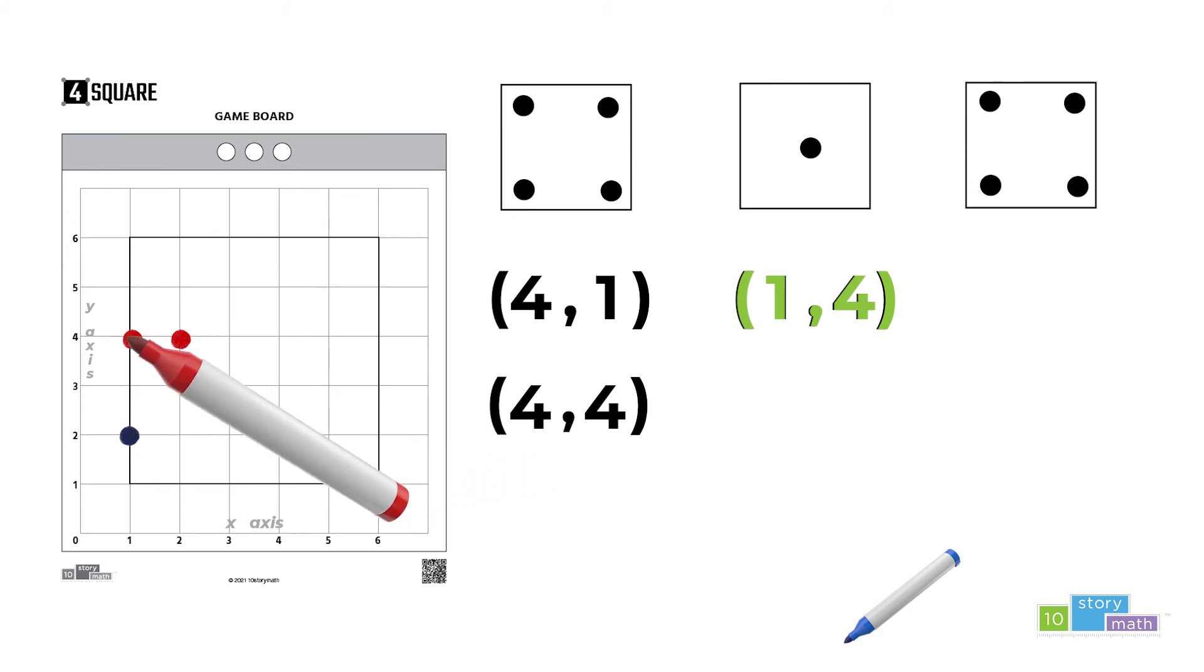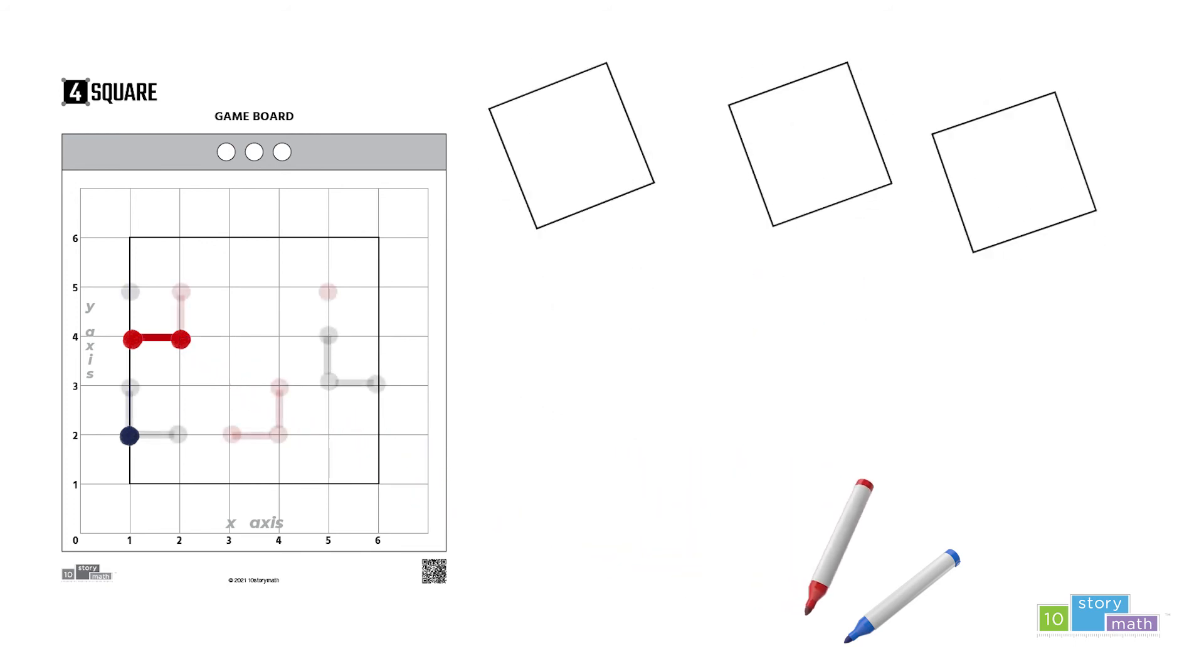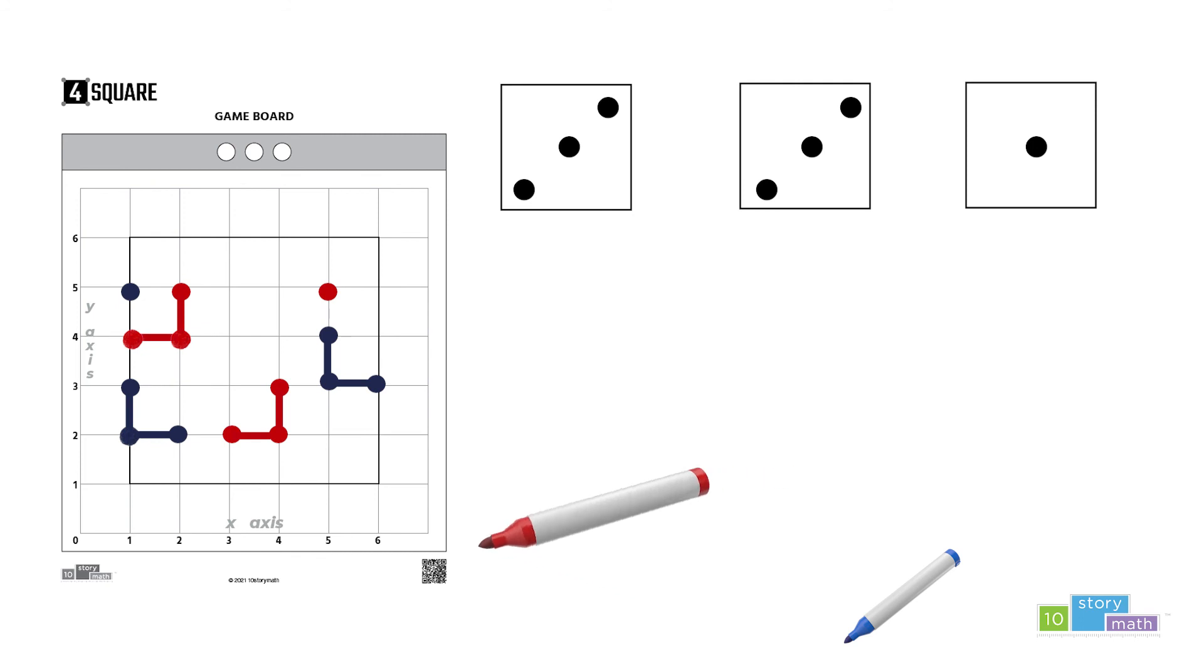If two points of the same color are next to each other on the game board, you can connect them with a line. If four of your points connect to form a square, shade the square in. In order to shade it in, all four of those points must be the same color.